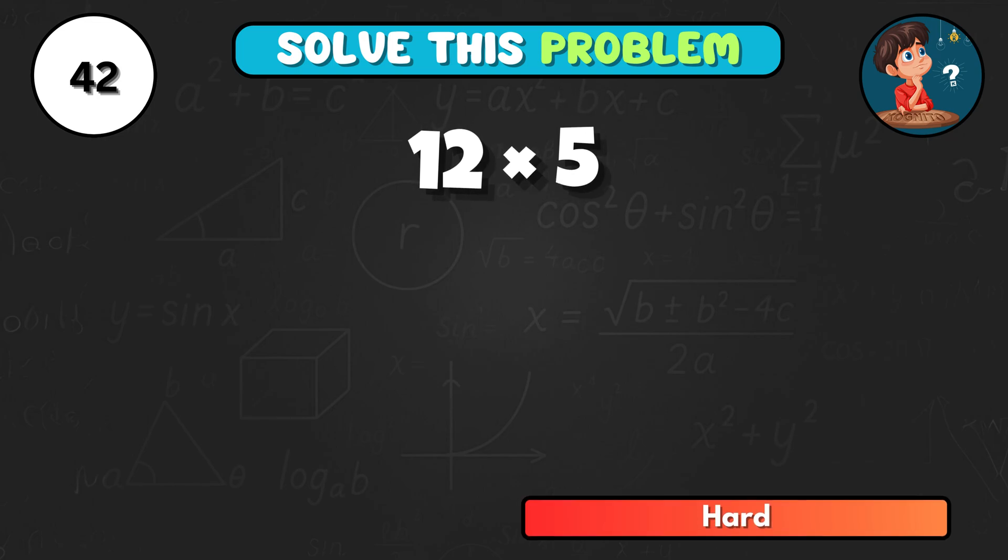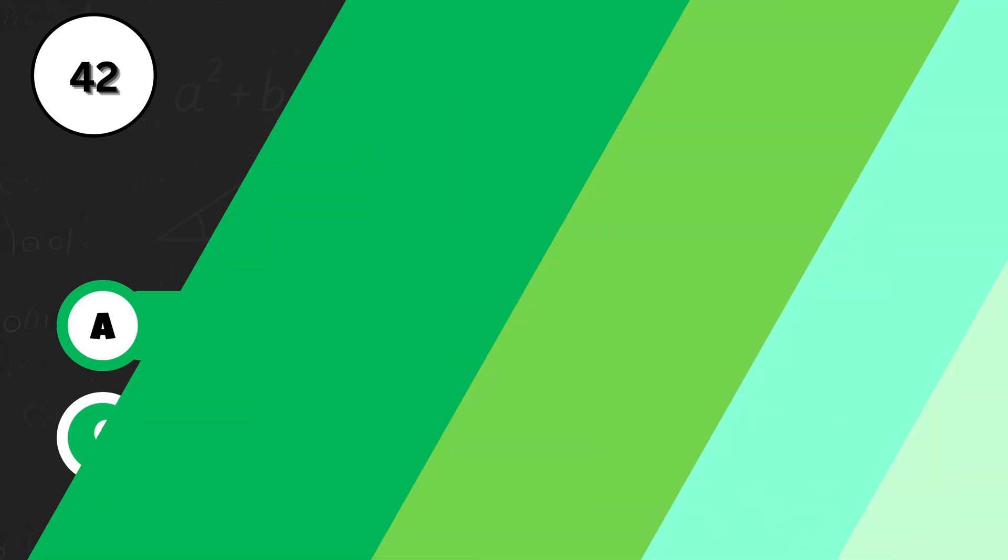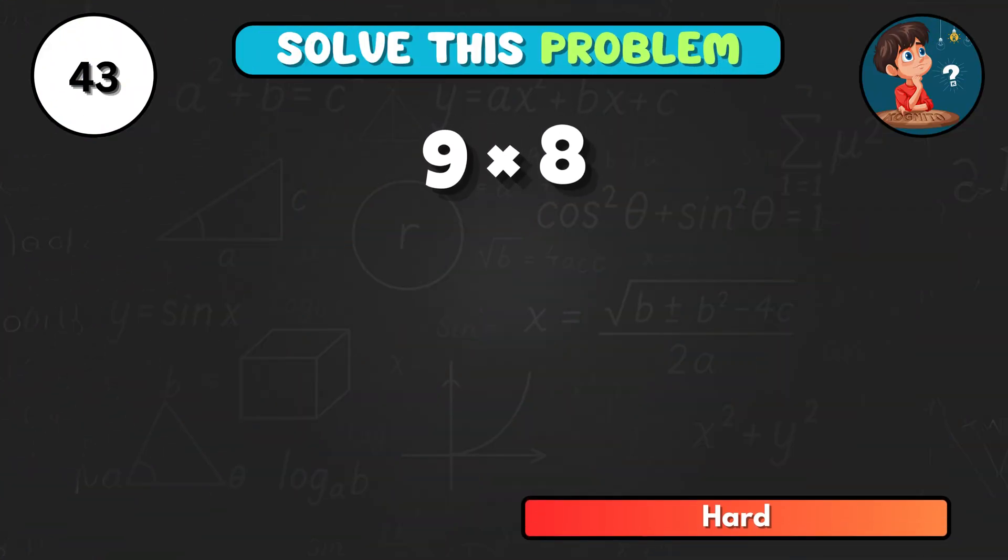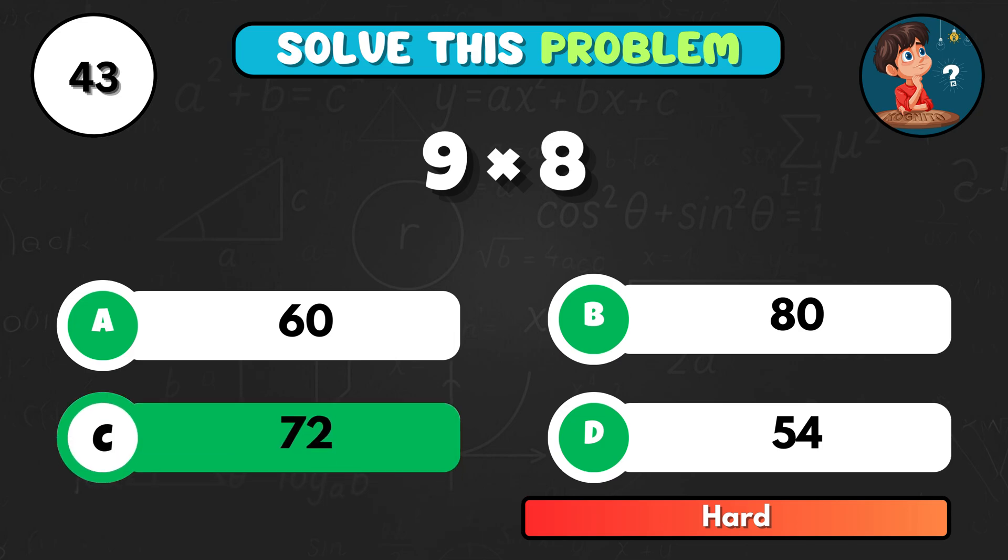Solve 12 times 5, easy or tricky. It comes to A, 60. Here's a test. 9 times 8 equals... That's C, 72.